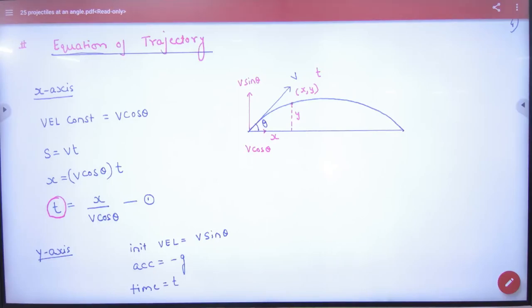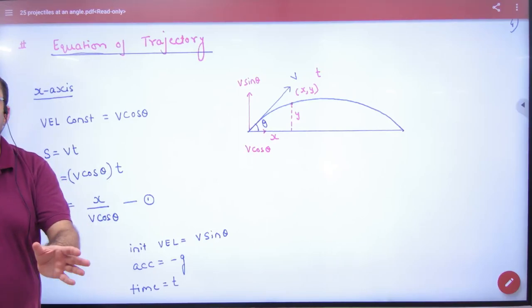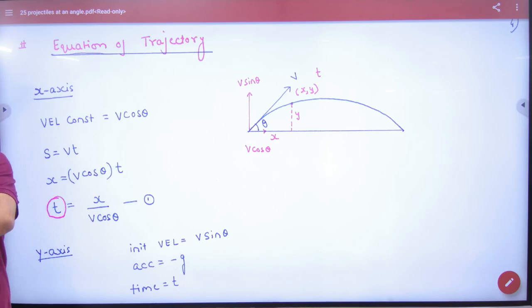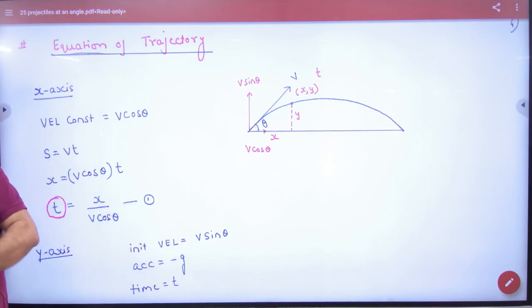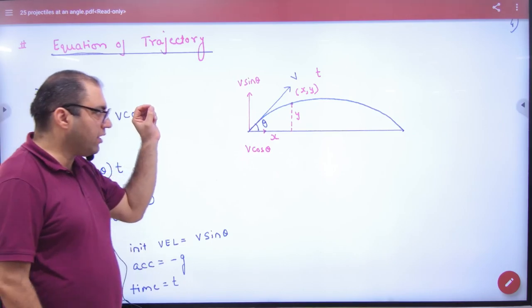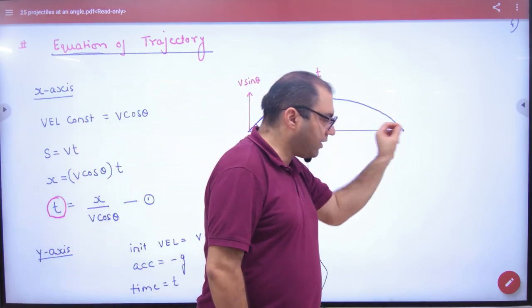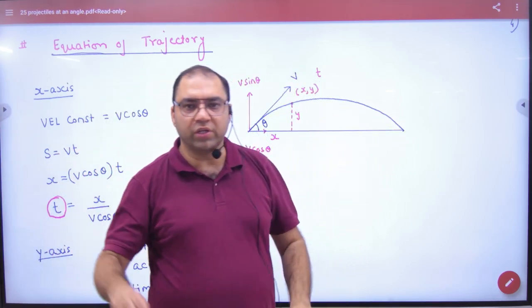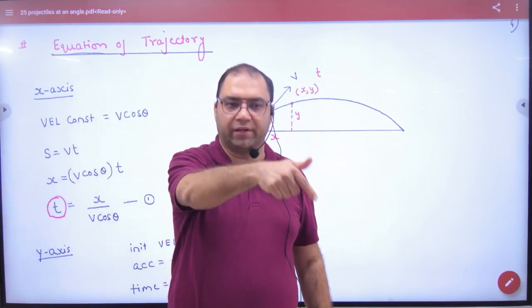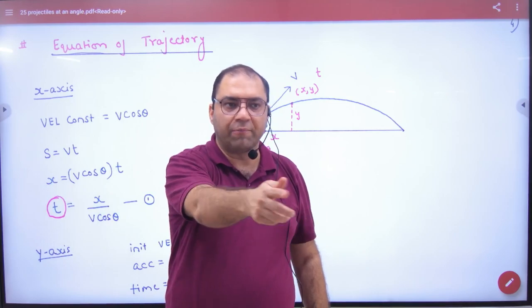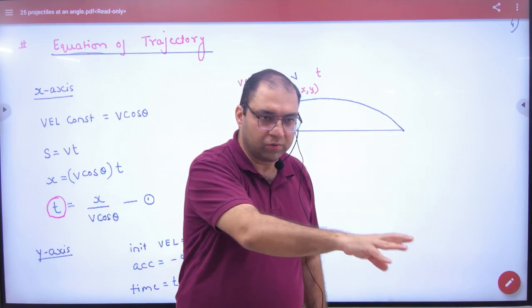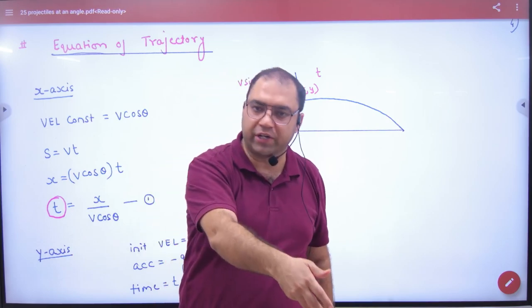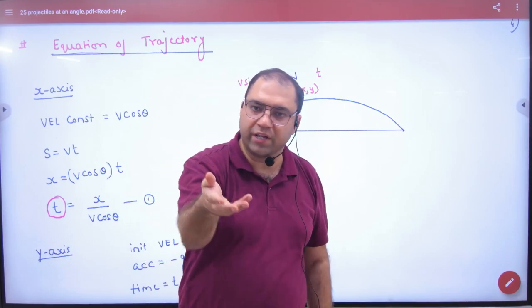In the Equation of Trajectory, what is called 'Trajectory'? Trajectory means path. When projectiles are launched, they follow a path. How is this path? Parabolic. So the Equation of Trajectory belongs to a parabola. We will say Equation of Trajectory means the equation of a parabola.